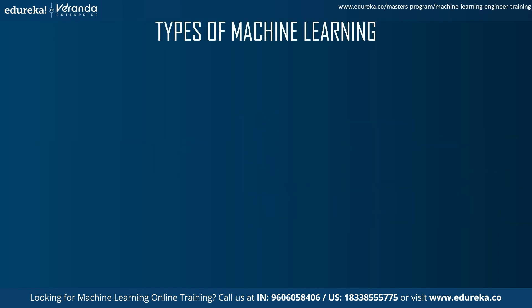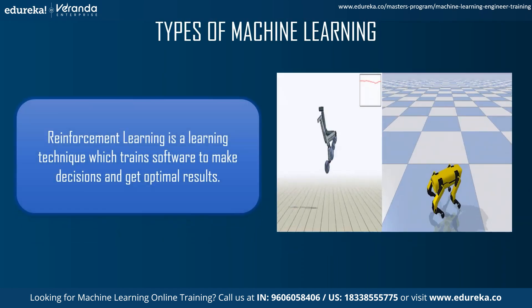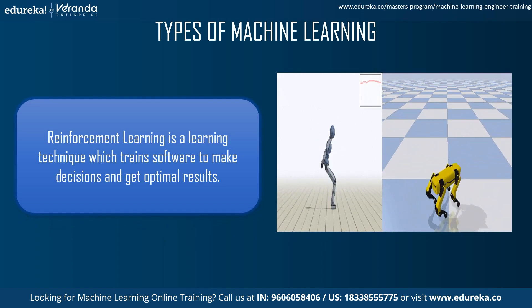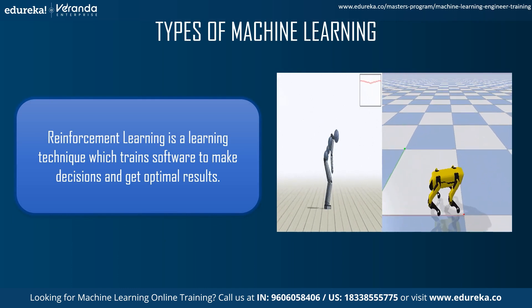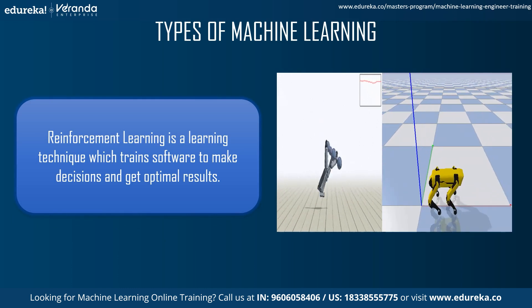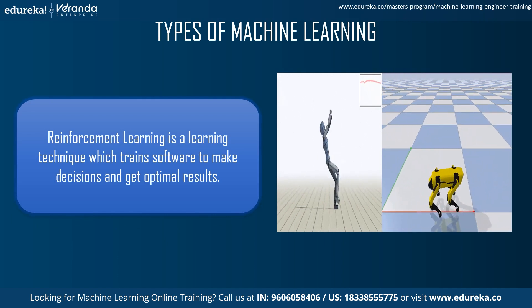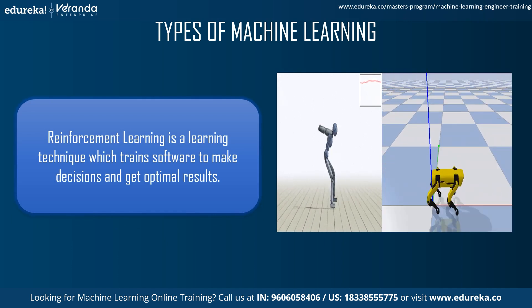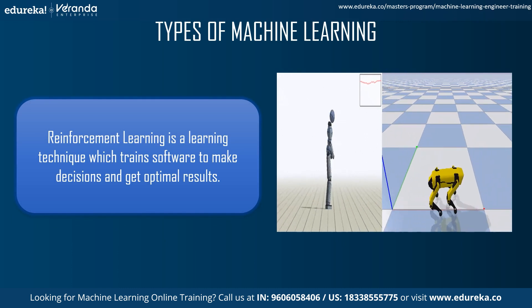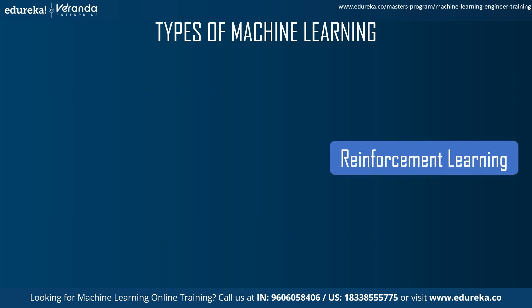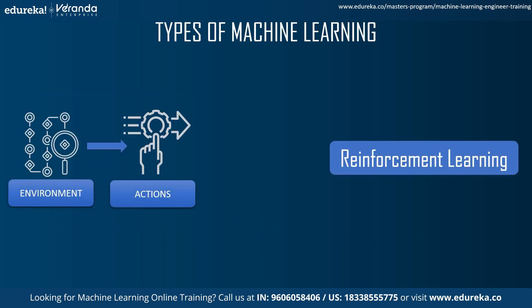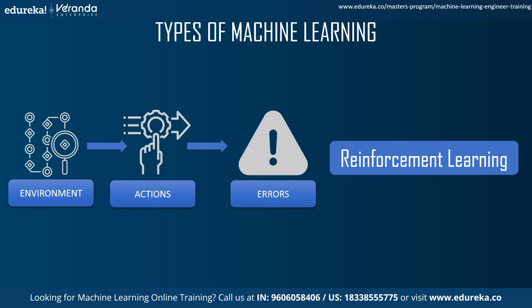The fourth type is reinforcement learning. You can understand it like playing a game — you make a mistake, learn from it, make another mistake on the next level, learn from it again, and eventually reach your goal. In software, the model is trained multiple times, making errors and learning from them. The reinforcement algorithm operates in an environment, takes actions, makes errors, gets results, and keeps iterating. That's how a reinforcement model works in machine learning.